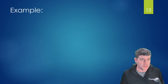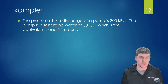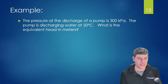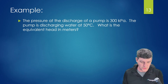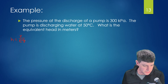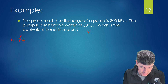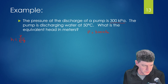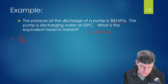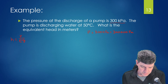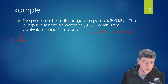Let's do an example problem using equivalent head. The pressure at the discharge of a pump is 300 kPa; the pump is discharging water at 50 degrees Celsius. What is the equivalent head in meters? To solve, head equals pressure divided by ρg. We need our pressure — from the problem, P equals 300 kPa. We have to be careful with units, so we convert to base units: 300,000 Pascals.